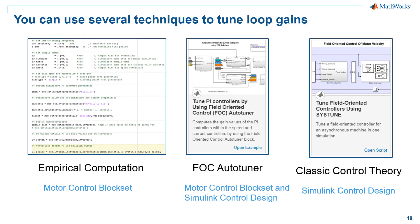For tuning the loop gains, Motor Control Blockset not only provides empirical calculations, but also an FOC auto tuner that can automatically compute loop gains based on the bandwidth and phase margin you specify. You can also use other tools from Simulink Control Design to tune control gains.